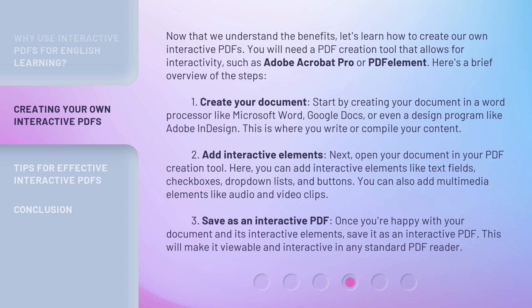Step 2: Add interactive elements. Next, open your document in your PDF creation tool. Here, you can add interactive elements like text fields, checkboxes, drop-down lists, and buttons. You can also add multimedia elements like audio and video clips. Step 3: Save as an interactive PDF. Once you're happy with your document and its interactive elements, save it as an interactive PDF. This will make it viewable and interactive in any standard PDF reader.